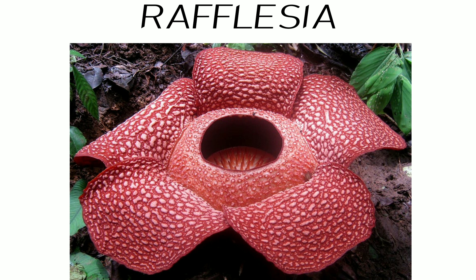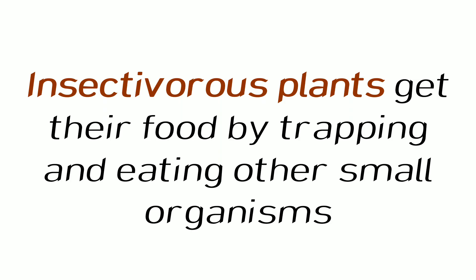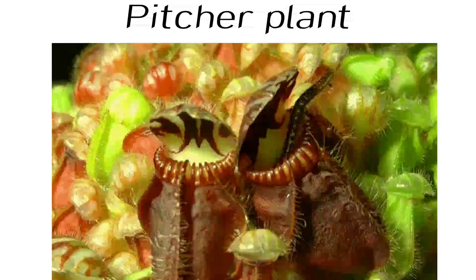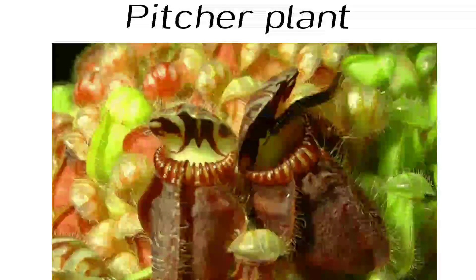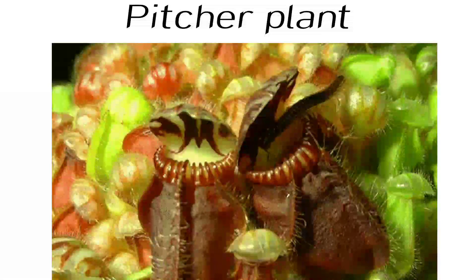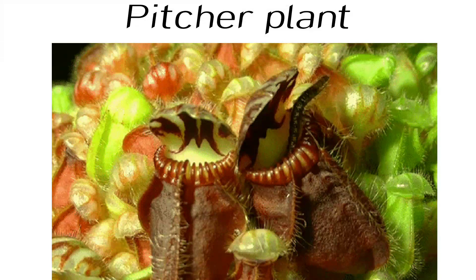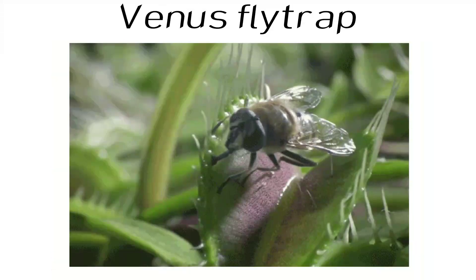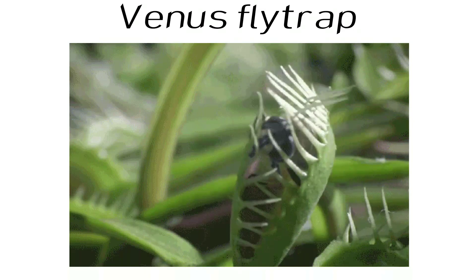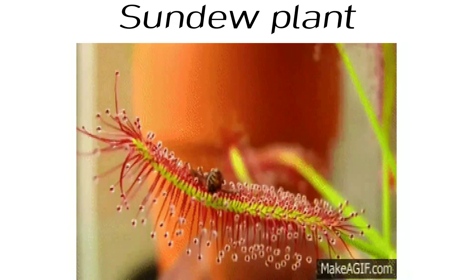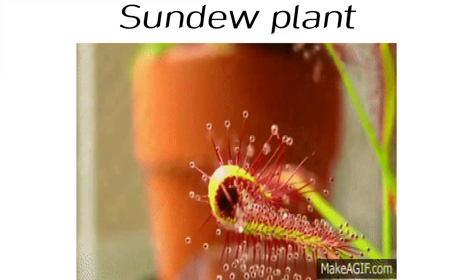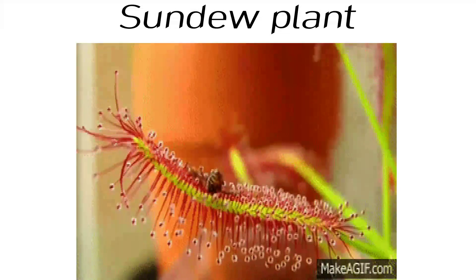Next is Rafflesia. These are found in dense forests and are the largest flowers in the world. They obtain their food from the tree on which they grow. Insectivorous plants get their food by trapping and eating small organisms. As you can see in the picture, a millipede is trapped by the pitcher plant, which has a sticky substance inside that digests the trapped organism. Next is the Venus flytrap — you can see how it traps its prey. Another example is the sundew plant, where the insect is trapped and then digested.